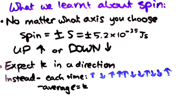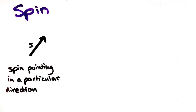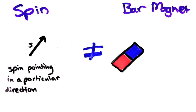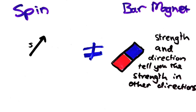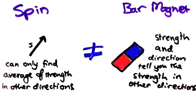So you see, it's possible to say which direction an electron spin is in and its strength, but it's not really like the classical situation with a bar magnet. With a bar magnet, knowing how strong the magnet is and in what direction allows you to find its strength in all other directions. That's not the case with spin.